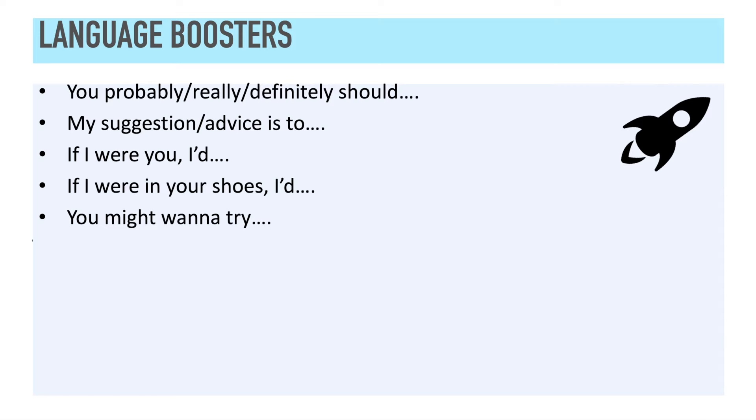The next structure is, you might want to try. You might want to try talking to your friend. Notice the use of ing after this structure. You might want to try doing something, speaking with your friend. The next structure is, it's generally best, or it's generally a good idea to. So, you could say, it's generally best to speak with your friend. Or, it's generally a good idea to speak with your friend.